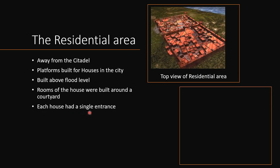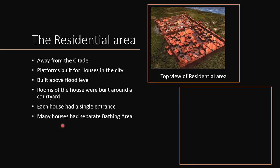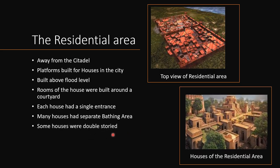Each house had a single entrance — no more than one. Many houses had a separate bathing area, as the bathing area may not have fit inside the main house. Some houses were double-storied. As you can see, some houses are bigger and some are smaller — this is a picture of the houses in the residential area.